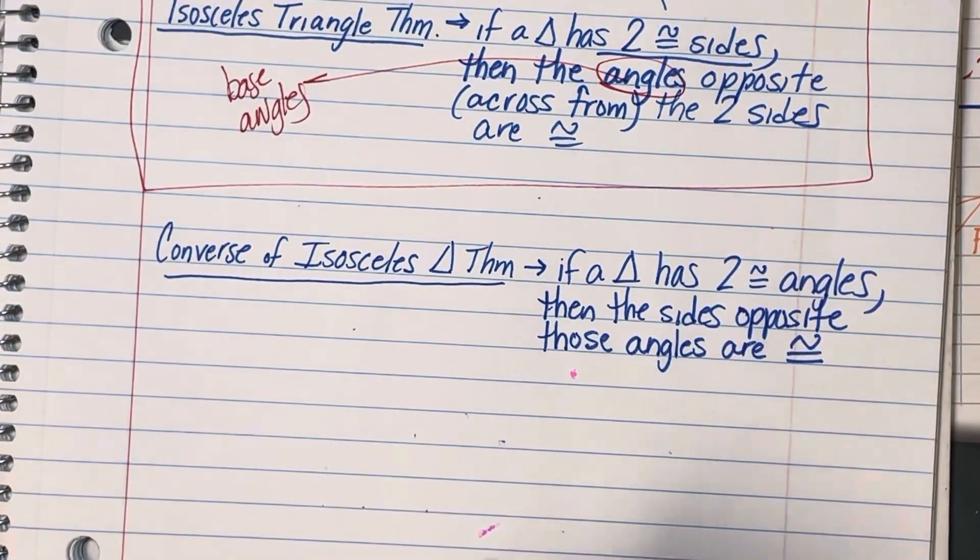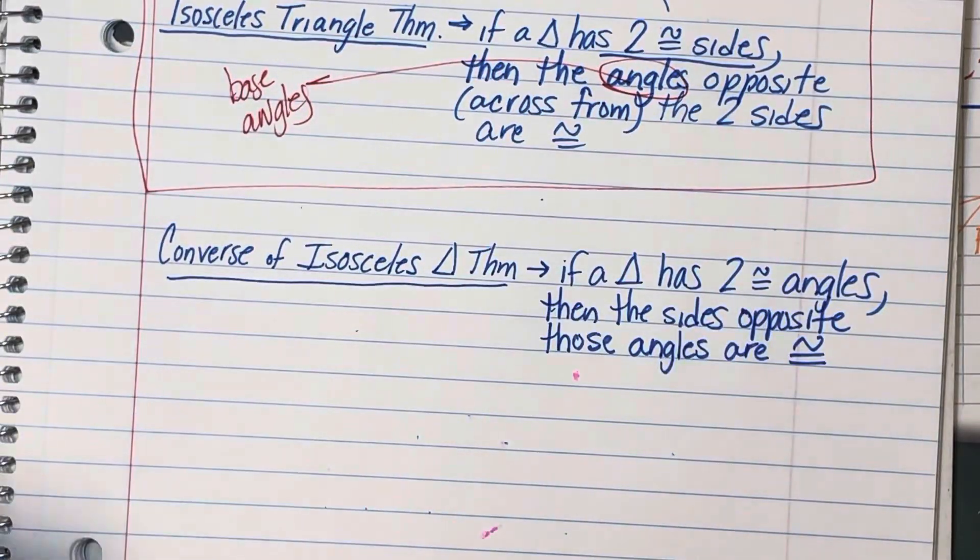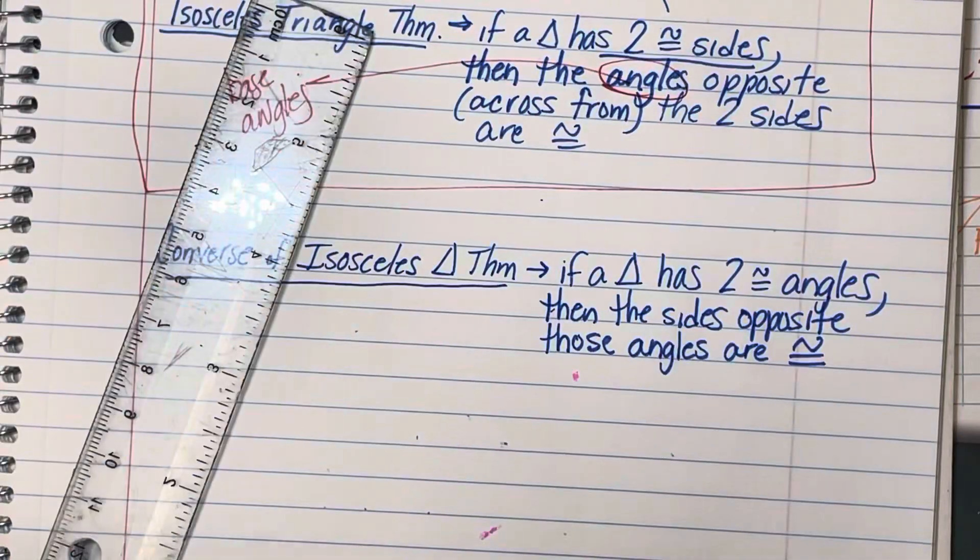Okay, remember with the converse, it's kind of like which comes first, the chicken or the egg, and it doesn't matter. So if we have a triangle,